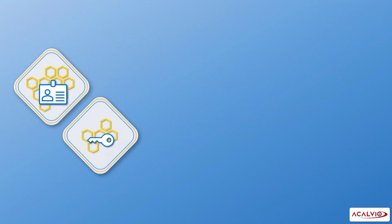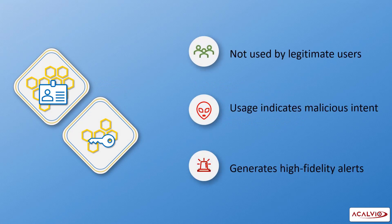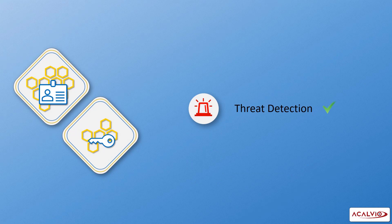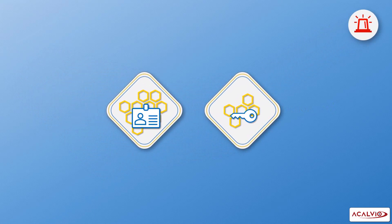Honey token accounts and honey tokens are not used by legitimate users. Any usage of these honey token accounts and honey tokens is indicative of malicious intent and raises high fidelity alerts. Together, honey token accounts and honey tokens can be used for primary threat detection. We'll now see how they are used to detect identity threats.